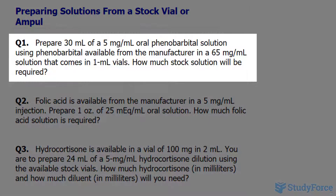Question number one reads: prepare 30 milliliters of a 5 milligram per milliliter oral phenobarbital solution using phenobarbital available from the manufacturer in a 65 milligram per milliliter solution that comes in one milliliter vials. How much stock solution will be required?